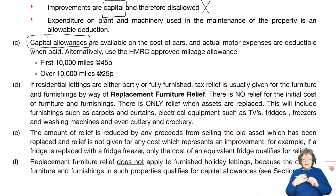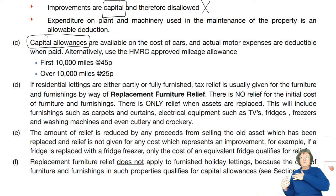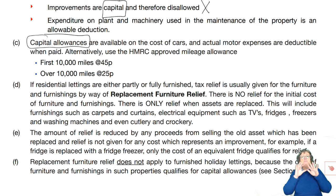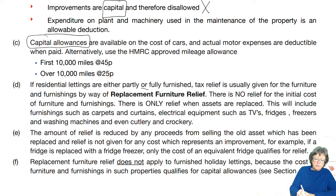Now, if the property is furnished — partly or fully furnished — you don't get relief or an expense for the initial furnishing. So the beds, cookers, wardrobes, drawers, anything that you buy and put in initially, you don't get any expenses for. Relief is only available under the replacement furniture relief system.